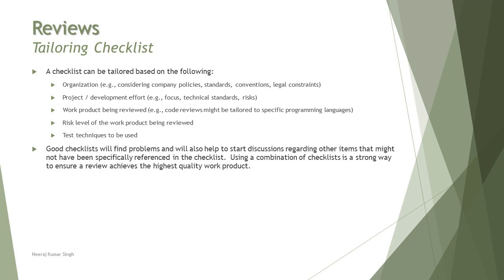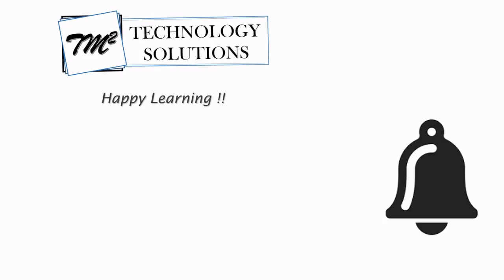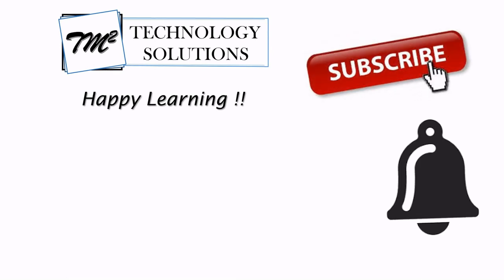A good checklist will always find problems and also help to start discussions regarding items that might not have been specifically referenced in the checklist. Using a combination of checklists is a strong way to ensure a review achieves the highest quality work product. Checklists generally help you determine a product quality and add a lot of value to the system and the work product. That's all from this tutorial — should you have any query, feel free to comment below. Till then, keep learning, keep exploring, and keep understanding the context. Thanks for watching and happy learning.